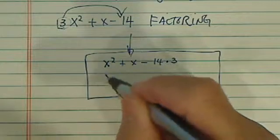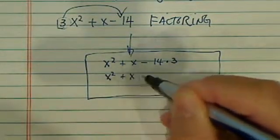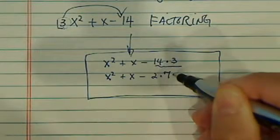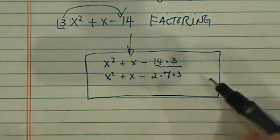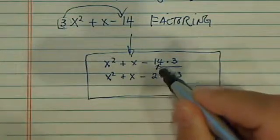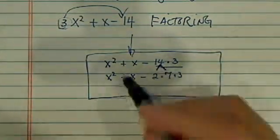I'm going to write one more step so it's easier to factor this one, because as the number gets bigger and bigger, it gets more and more difficult to find the numbers. I'm factoring this one. All I did was write 14 as 2 times 7.